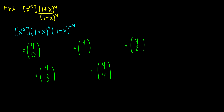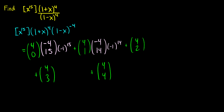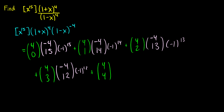If we choose 0 x's from (1 + x)^4, we have to get 15 x's from (1 - x)^(-4). Using the extended binomial theorem, this is negative 4 choose 15 times (-1)^15. If we choose 1 x, we need 14 more, giving negative 4 choose 14 times (-1)^14. Choosing 2 gives negative 4 choose 13 times (-1)^13. Choosing 3 gives negative 4 choose 12 times (-1)^12. And choosing 4 x's from (1 + x)^4 leaves x^11 needed, so it's negative 4 choose 11 times (-1)^11.